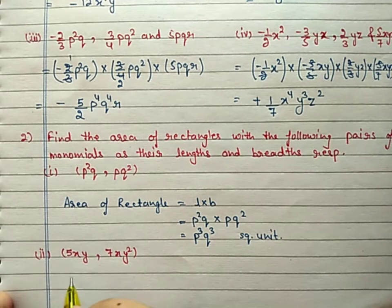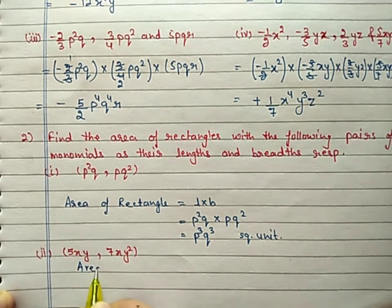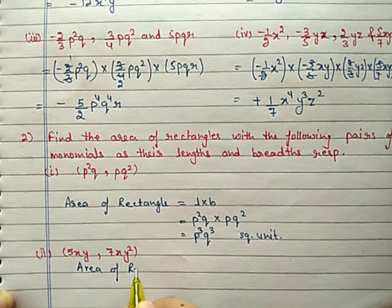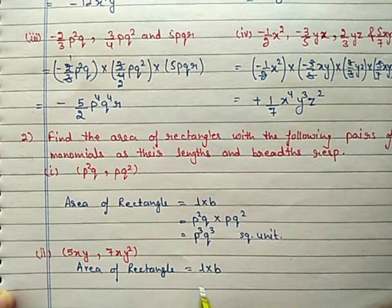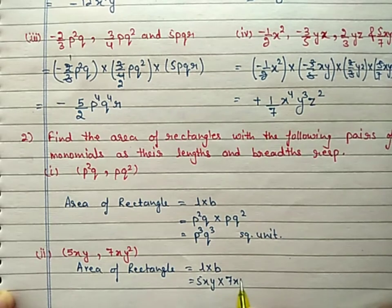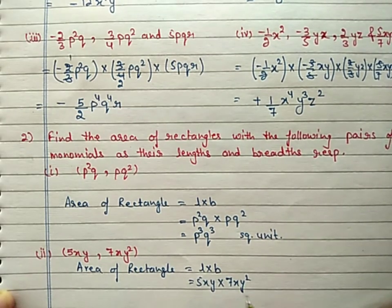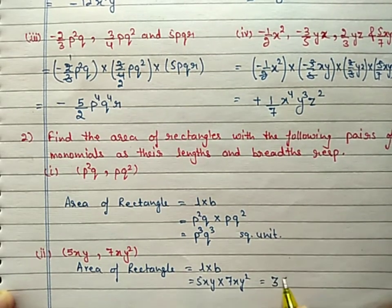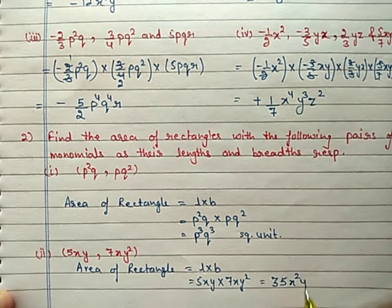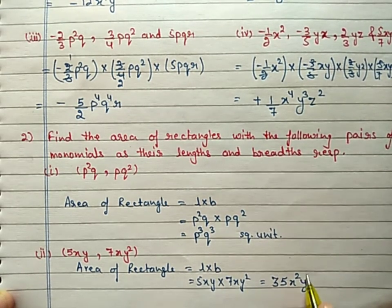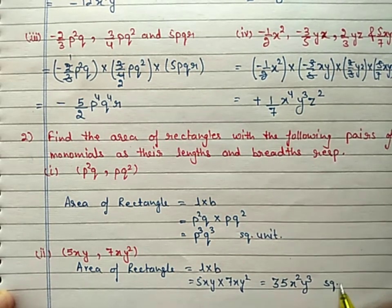Second part: 5xy and 7xy². Area of rectangle equals length into breadth. Length is 5xy, breadth is 7xy². Multiply number to number: 7 × 5 = 35. x has powers 1 and 1, so x². y has powers 1 and 2, so y³. Answer: 35x²y³ square units.